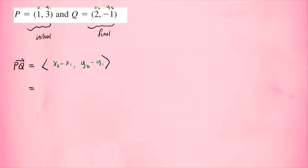Plugging in the values: x2 is 2, x1 is 1, y2 is negative 1, and y1 is 3. This gives us the vector (1, −4). So this is the vector from point p to q.